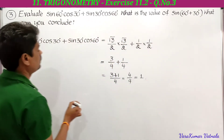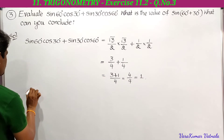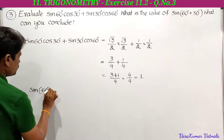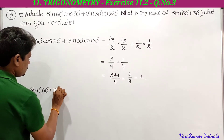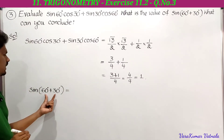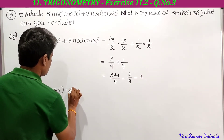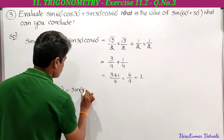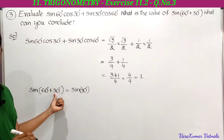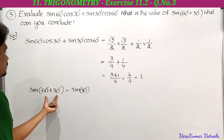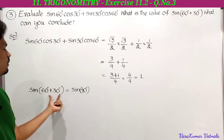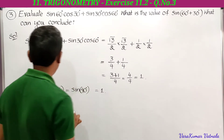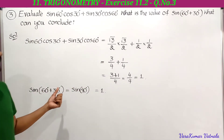Now, what is the value of sine of 60 plus 30? Sine of 60 plus 30 can be written as sine of 90. Because 60 degrees plus 30 degrees equals 90 degrees, and sine 90 degrees is equal to 1.